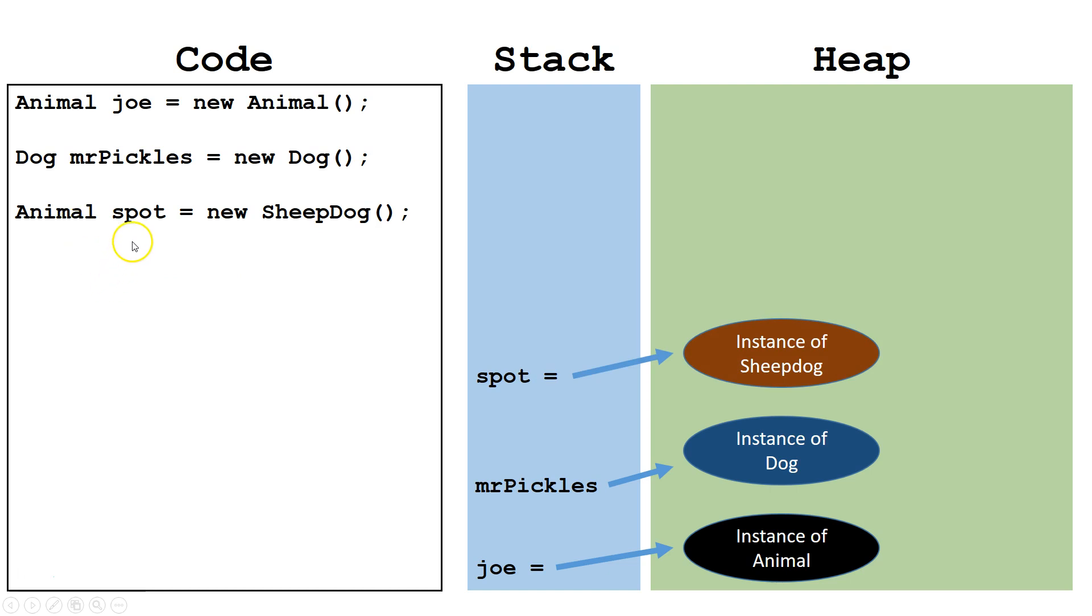We may have a reference variable refer to an object of a different type as long as the object it refers to is a subclass. So, since the reference variable is an Animal and the object is a Sheepdog, this is perfectly legal.